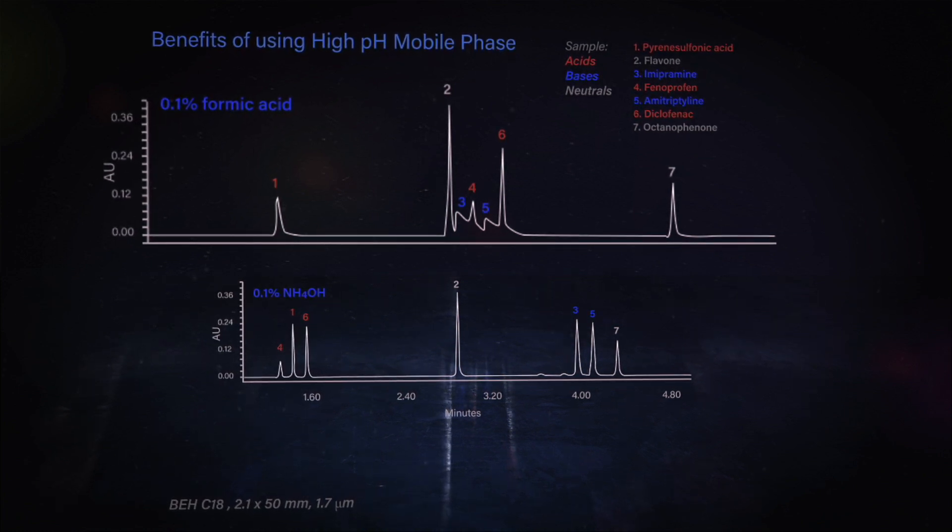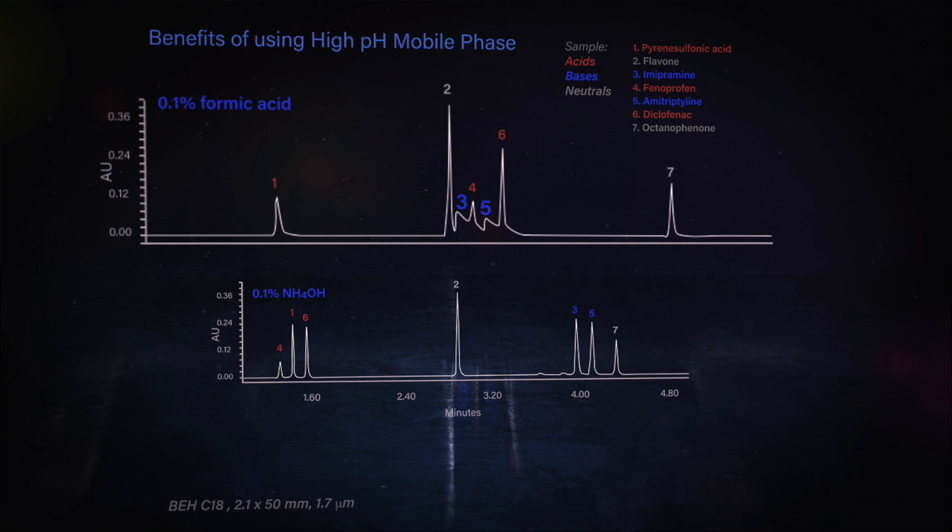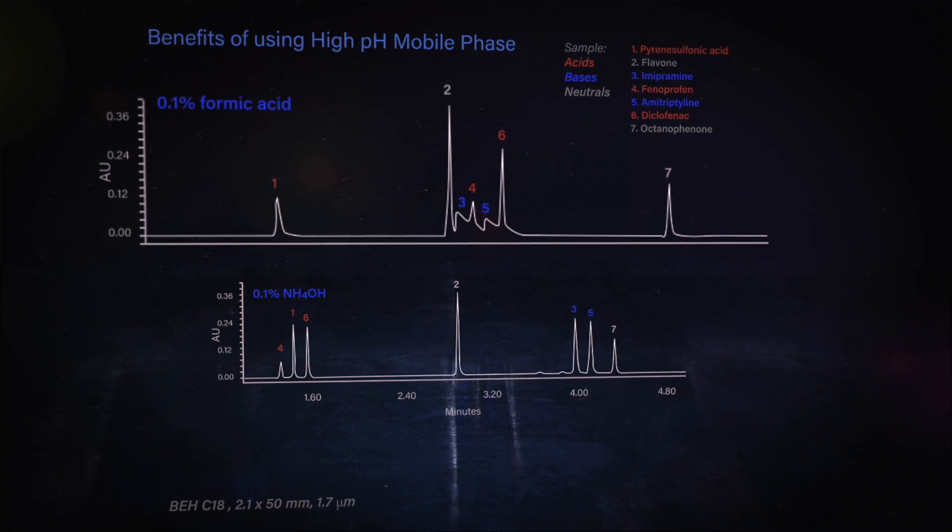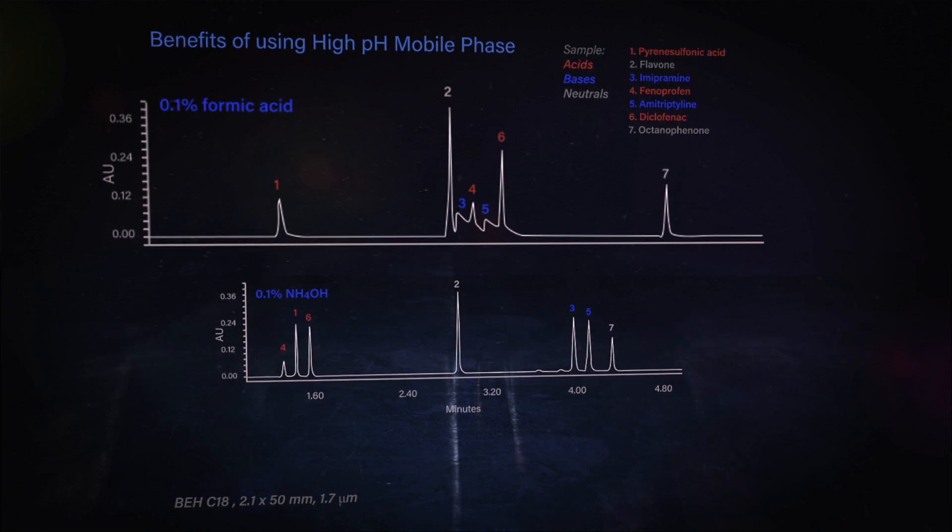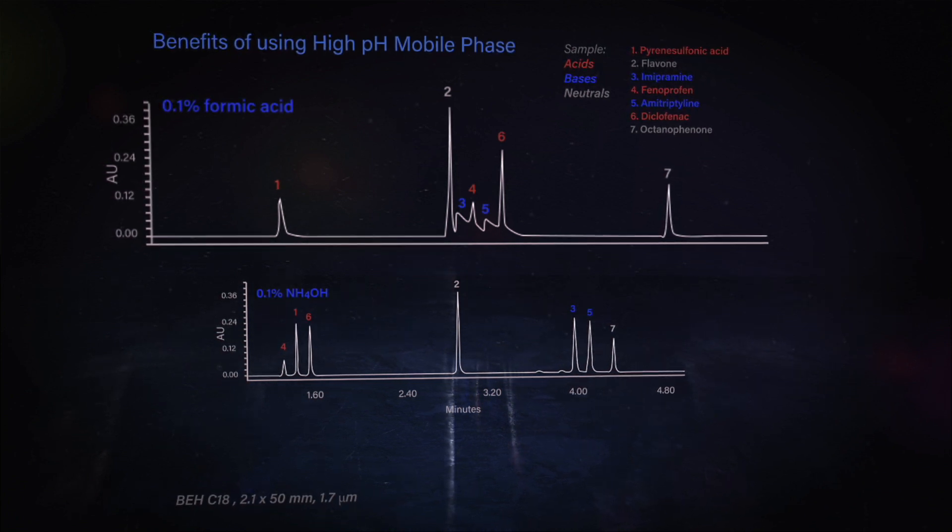But you can see the basic analytes, peaks three and five, they have pretty poor peak shape, even though they are kind of well retained. Yeah, they have kind of that shark fin peak shape, and they're really going to interfere with the quantification of peaks four and six.